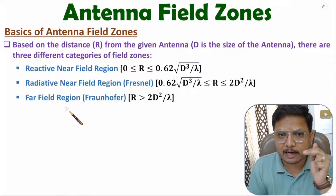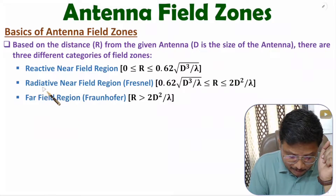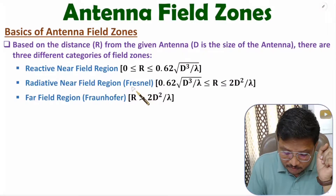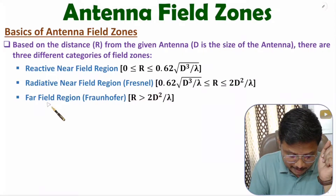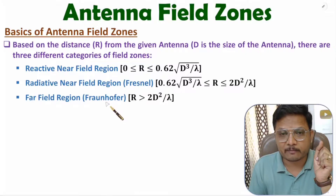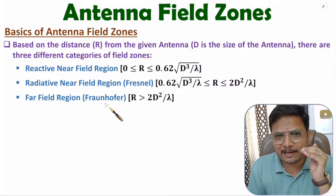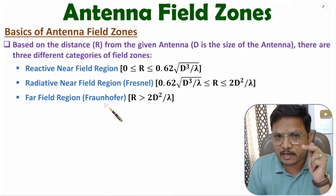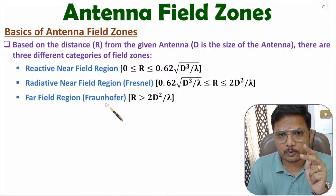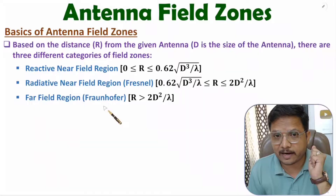In optical terminology, the radiative near field region is called the Fresnel region and the far field region is called the Fraunhofer region. Here we will be talking about electromagnetic terminologies only. Based on field zones, we have the radiation characteristics of the antenna.